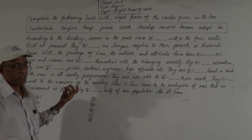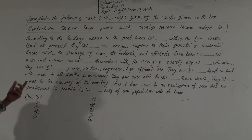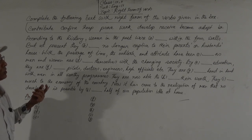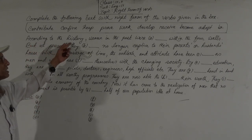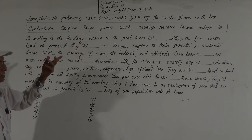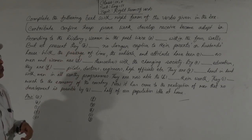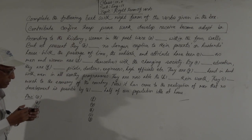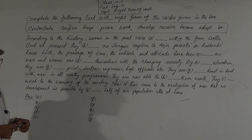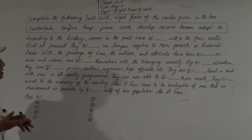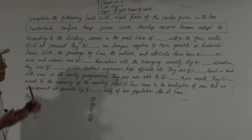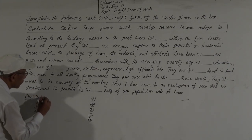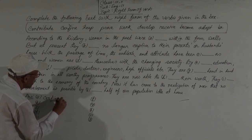The verb 'be' was used in the first sentence. The passage begins: according to the history, women in the past were confined within the four walls. There is a verb 'confine' in our box. After a be-verb, it becomes an adjective — 'confined.' So the answer for gap A is confined.